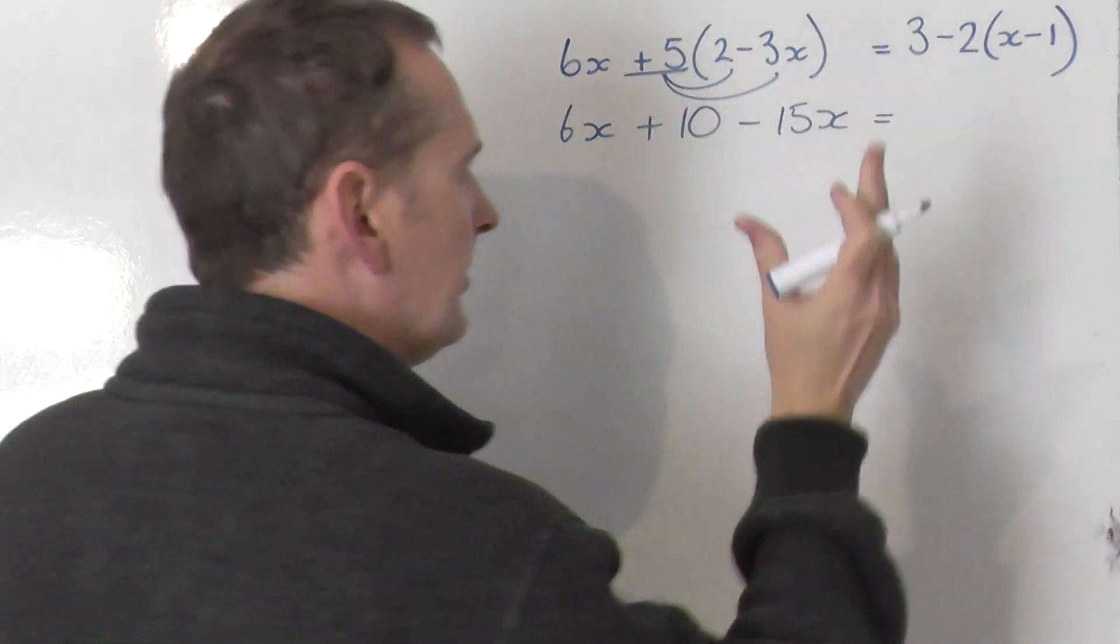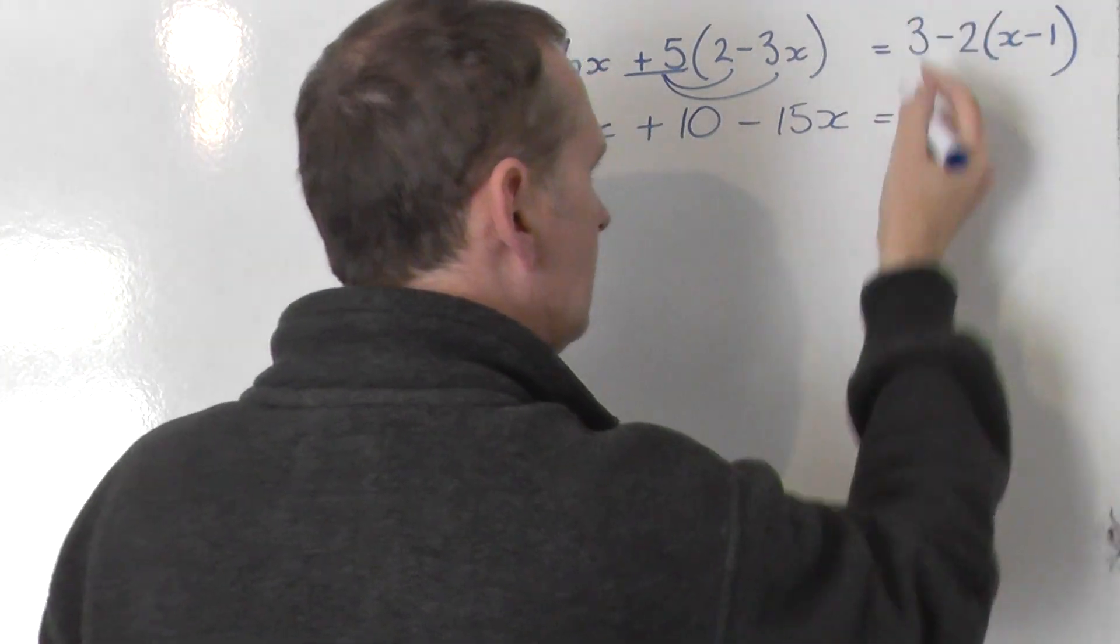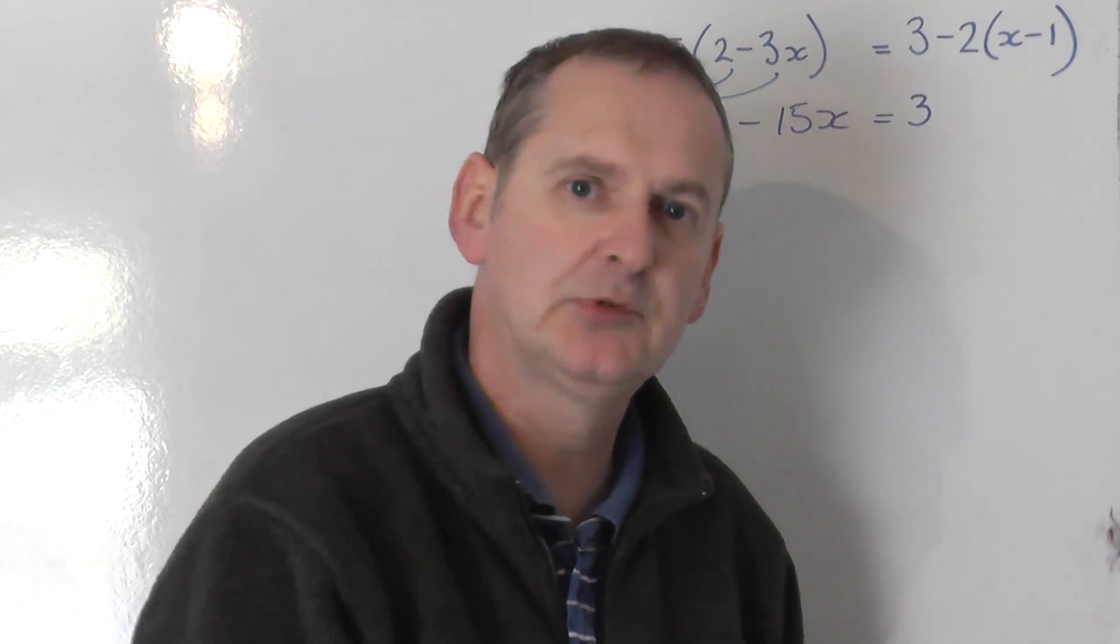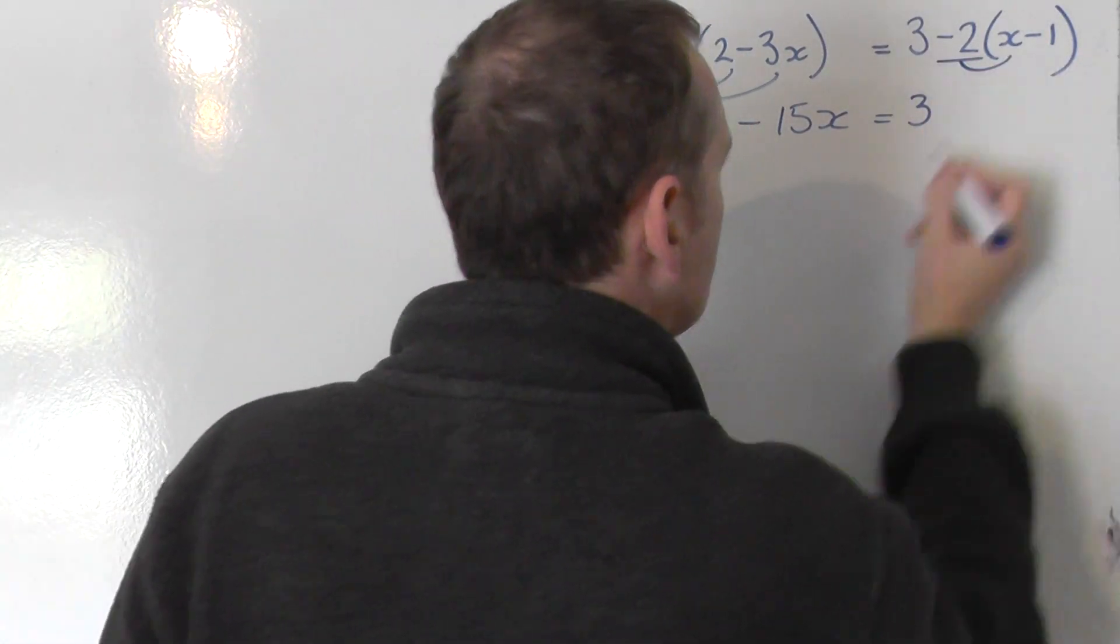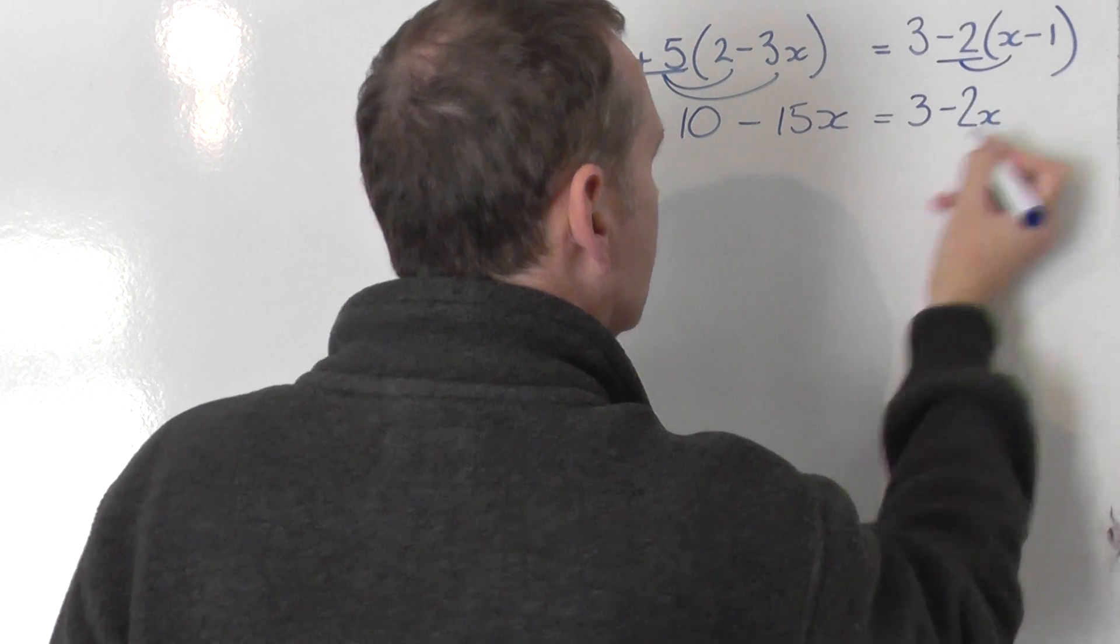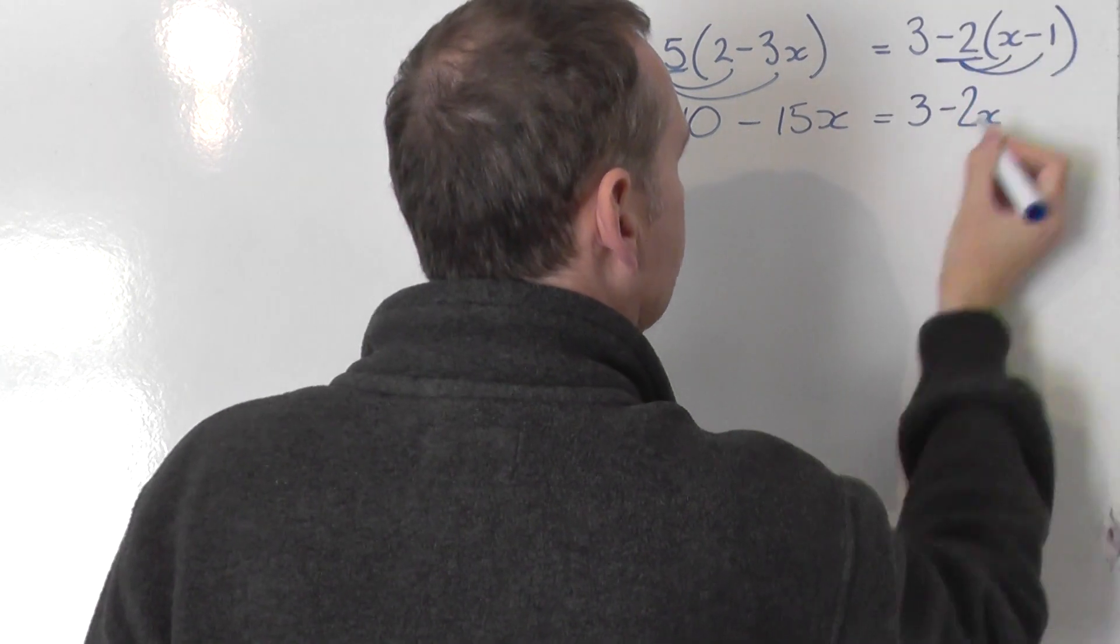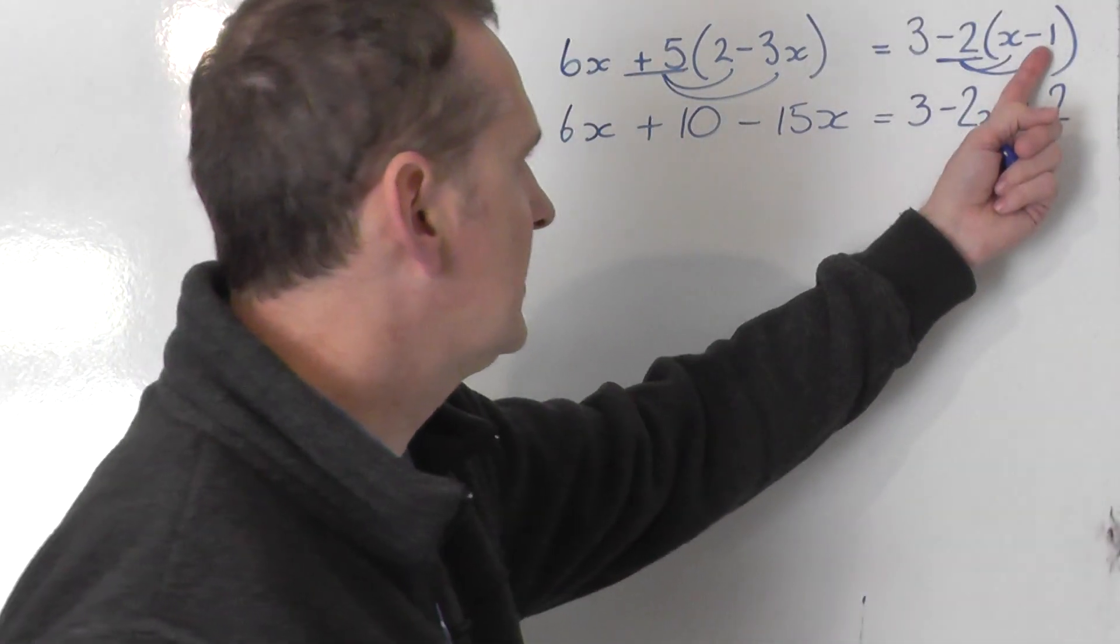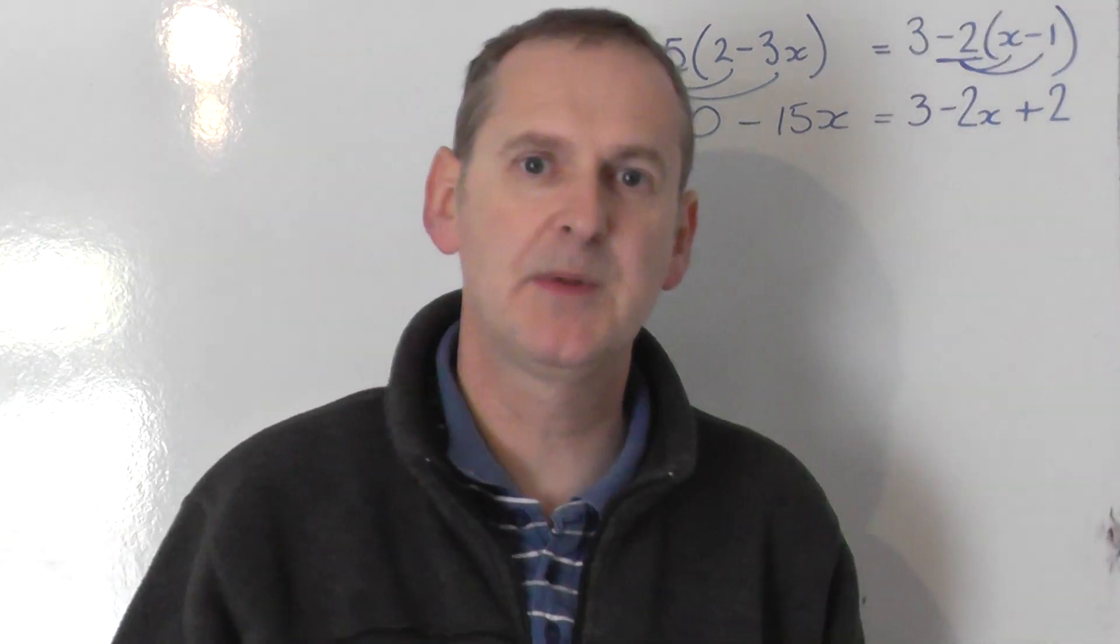Equals. Do not be tempted to work out 3 take away 2. What we've got is 3 take away 2 lots of the bracket. So minus 2 lots of x is minus 2x and minus 2 times minus 1 is plus 2. The minus there actually becomes a plus when you expand it out.